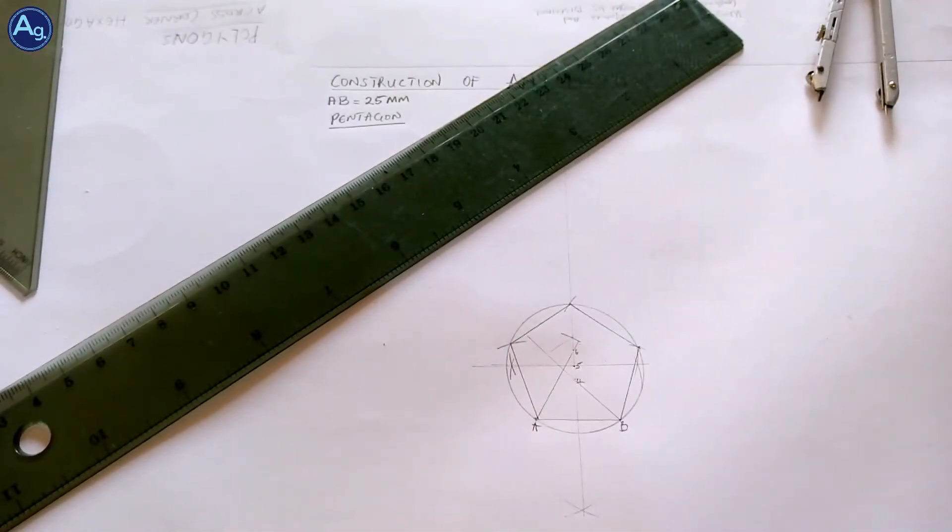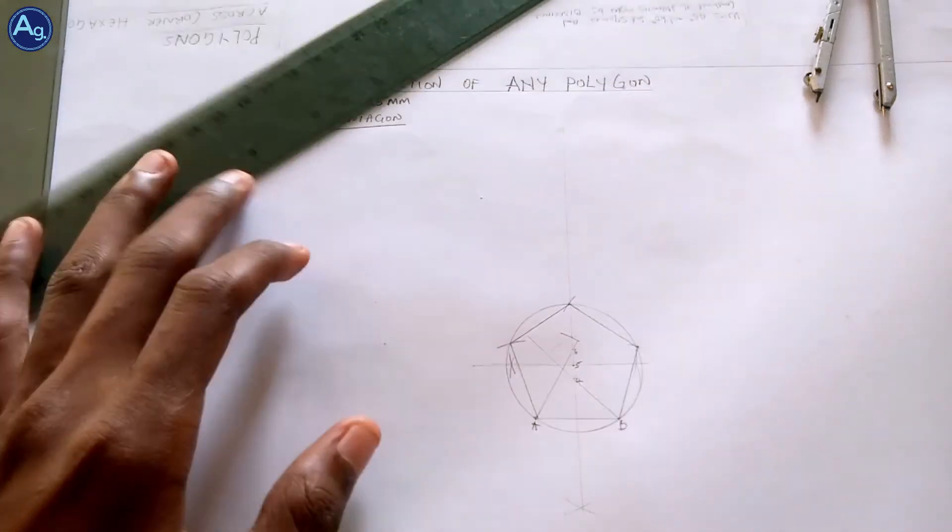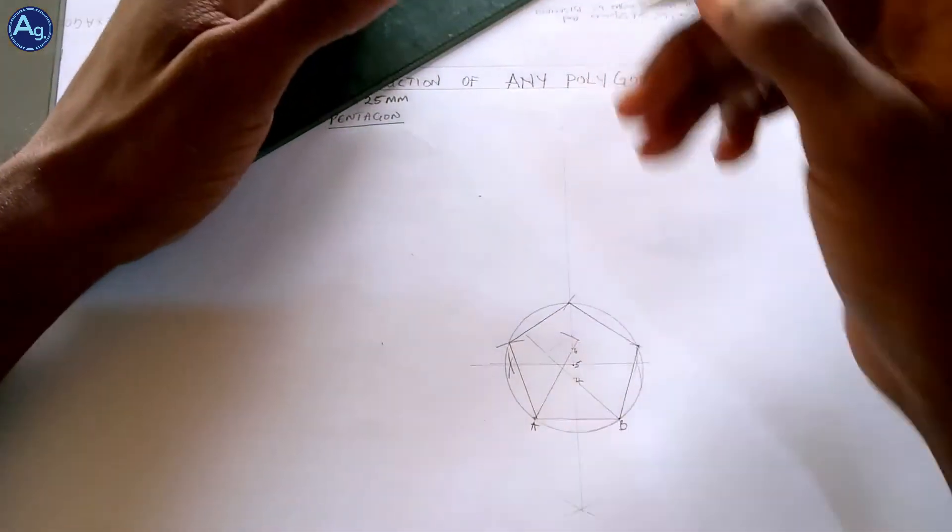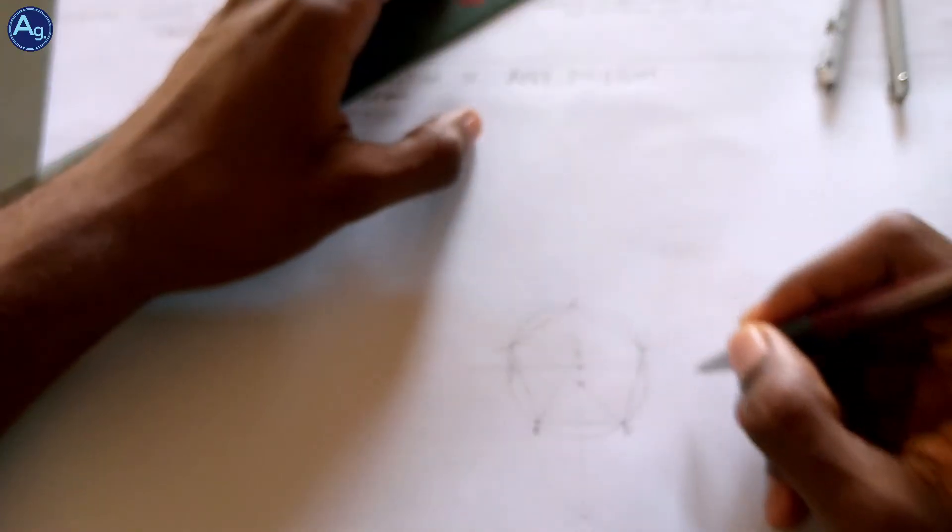Our pentagon is complete. So if we want to draw hexagon, for instance, hexagon has six sides.